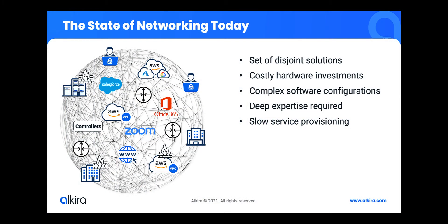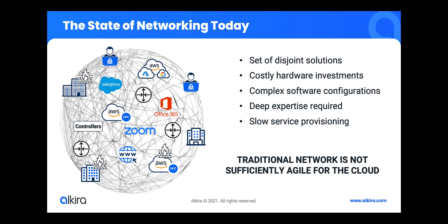Building networks for the cloud era using traditional methods is a daunting task. The lack of a uniform approach forces organizations to rely on a set of disjointed solutions for on-premises, cloud, and multi-cloud connectivity. Such solutions oftentimes carry a burden of costly hardware investments coupled with complex software configurations and a need for acquiring deep cloud and networking expertise. All of this results in slow service provisioning. Simply put, the traditional network is not sufficiently agile for the cloud.